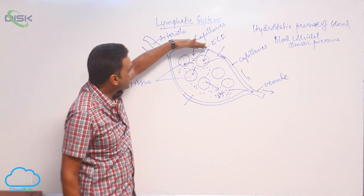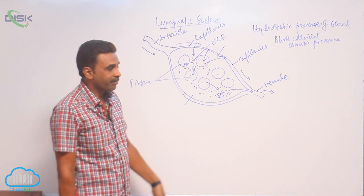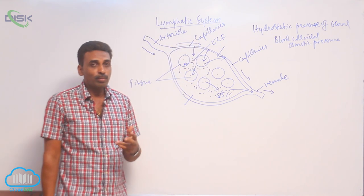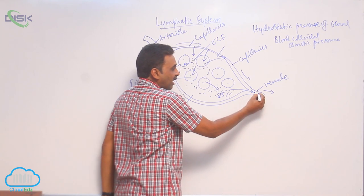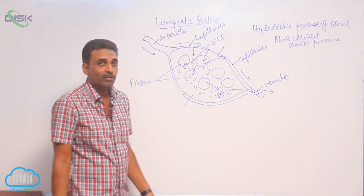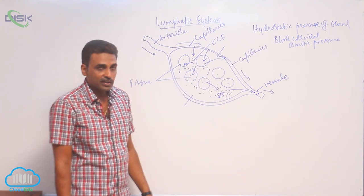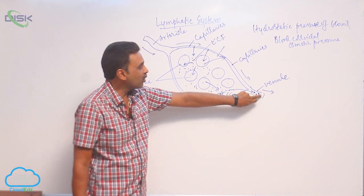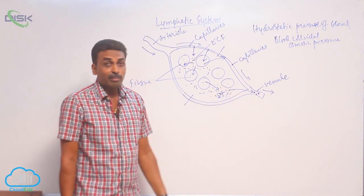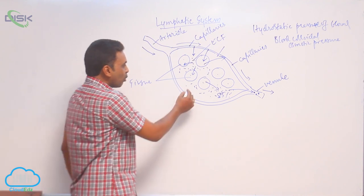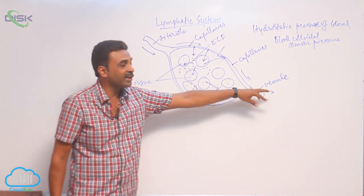When blood is passing through the capillaries, only substances with less molecular weight are filtered. The larger proteins — albumin, globulin — cannot be filtered outside; they remain inside the blood. These larger proteins are present in the form of colloids and exert pressure called blood colloidal osmotic pressure. Because of this osmotic pressure, about 85 percent of the fluid enters back into the venules.